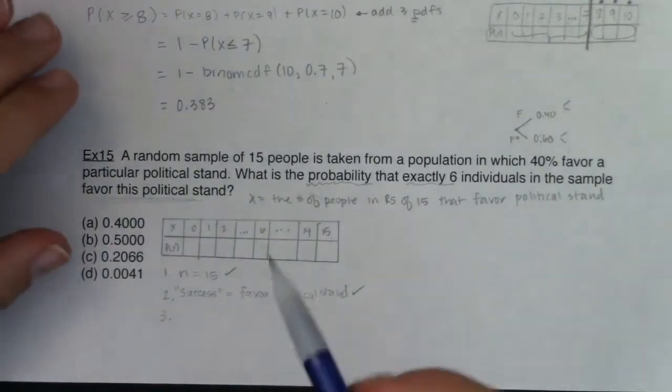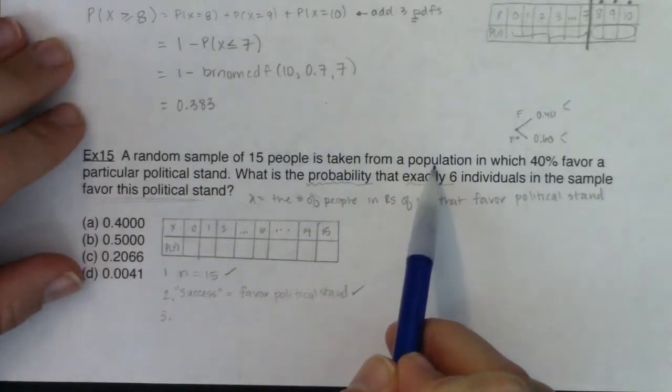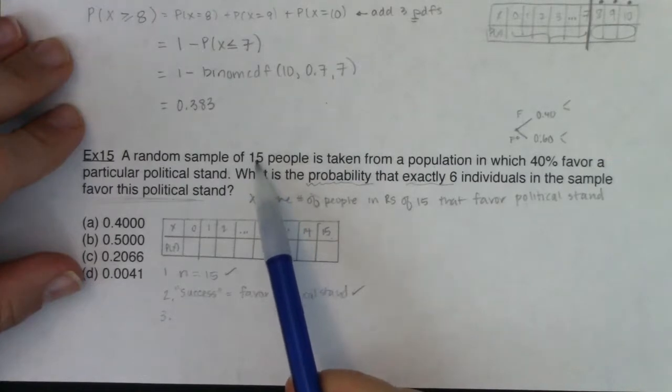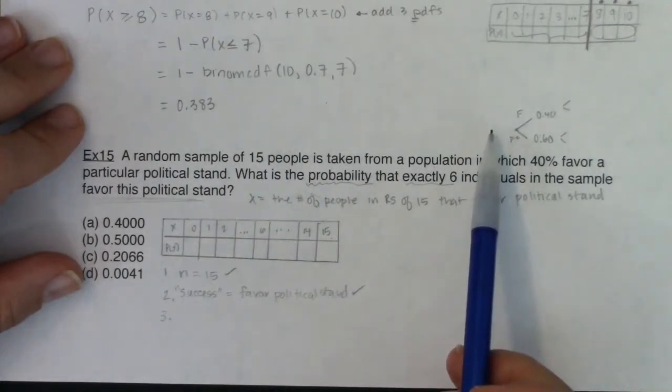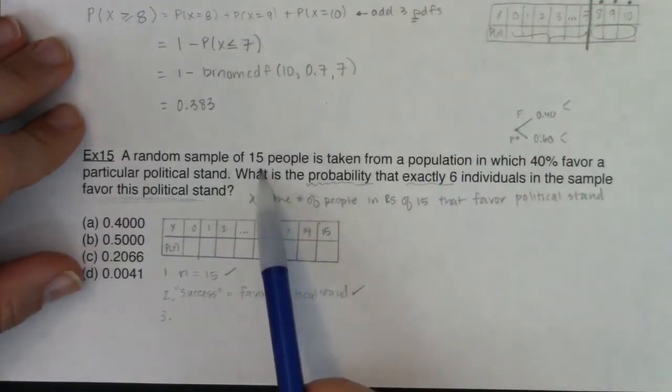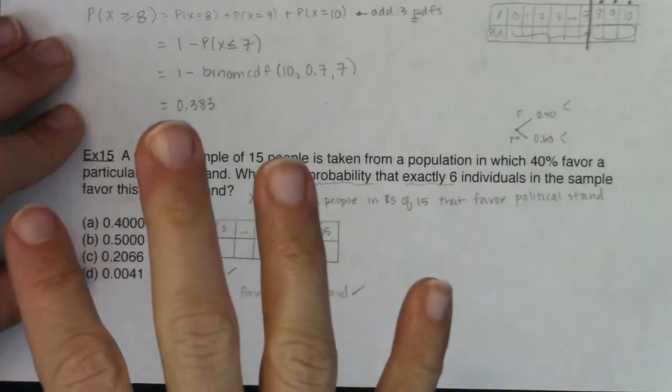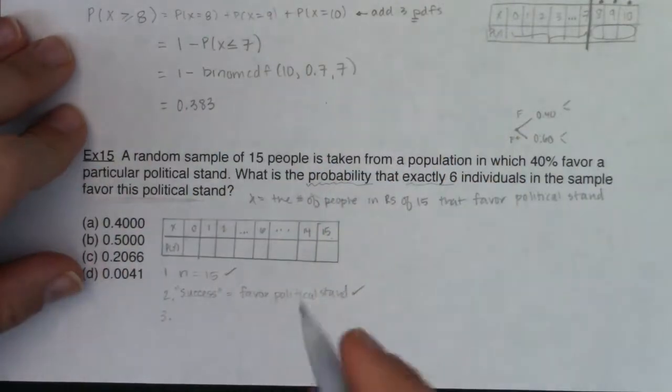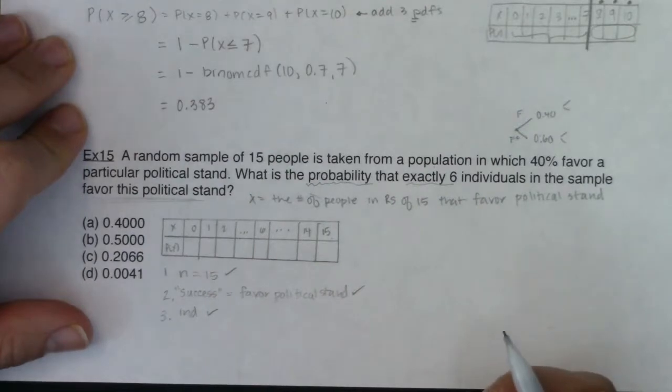Are the trials independent? Well, let's think about this. I'm taking a random sample of people from a population. So if this is random, would one person's opinion on this political stand have any bearing on the next person's opinion of that political stand? And it should be no. If this is random, then these folks probably don't know each other. So one person's opinion won't affect the other person's opinion. There's no bias there. So I'm going to make the assumption that these are independent.